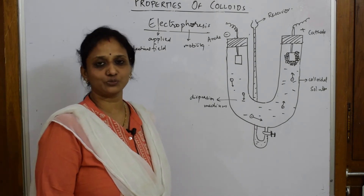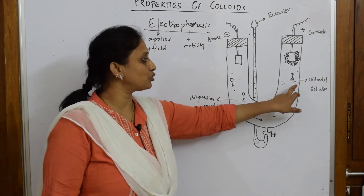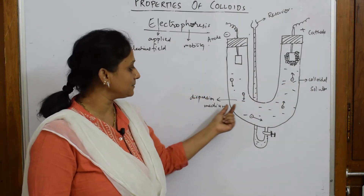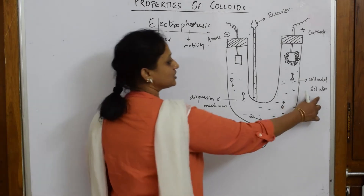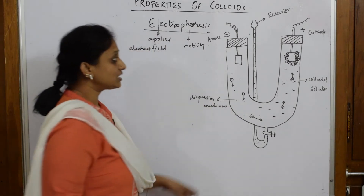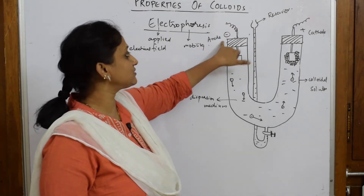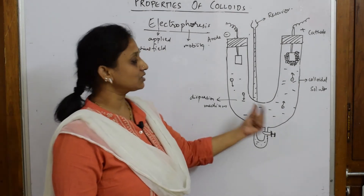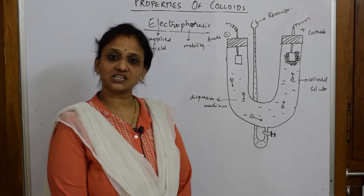I'm going to show you this in a U-shaped tube where we have taken a colloidal solution. In a colloidal solution, you have both the dispersed phase — the particles — as well as the dispersed medium, which is water or any medium. Now you're connecting both ends of the U-tube to electrodes. One electrode would be the anode and the other would be the cathode. We've already seen that colloidal solutions have attained charge — positively charged and negatively charged.